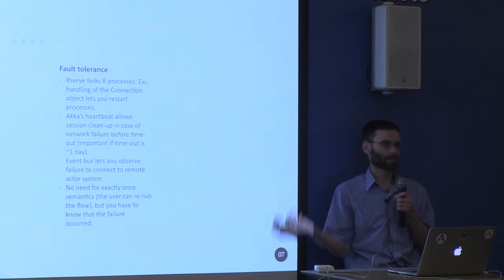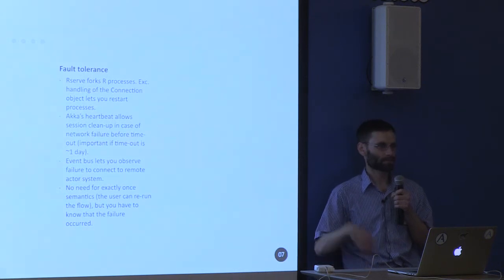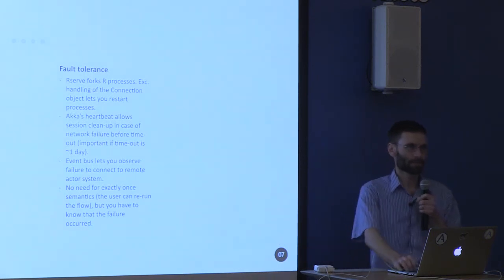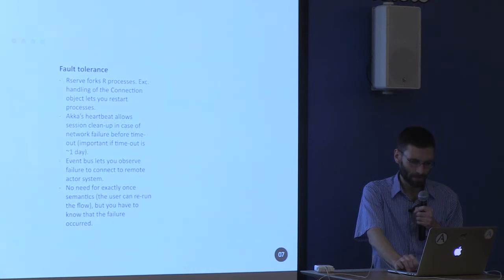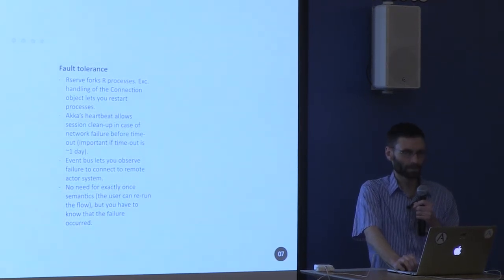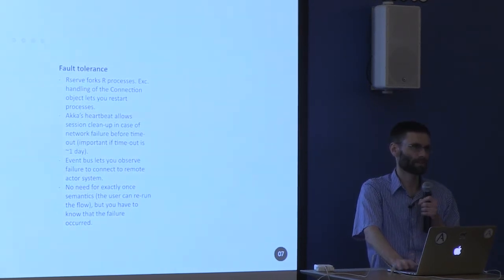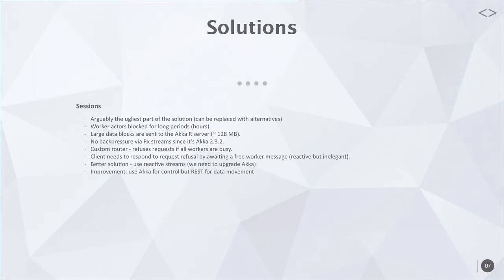You will get locally the terminated message when the network is no longer available. That's great, because in many cases it's not about guaranteed delivery. You at least want to tell the user their network is down, or that they need to rerun this workflow because a failure occurred. The heartbeat actually helps here, and it also prevents you from waiting until the timeout is up — if your timeout is one day and your network disconnects after five minutes, you'd rather terminate the flow immediately.